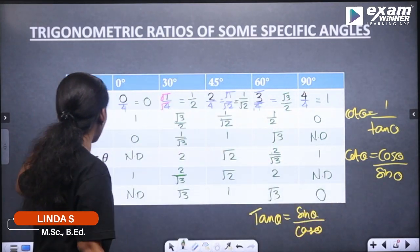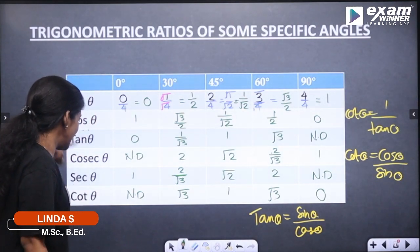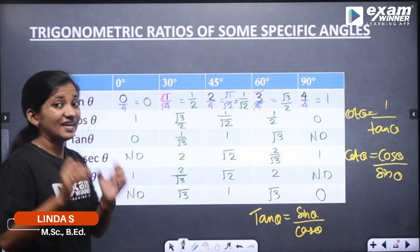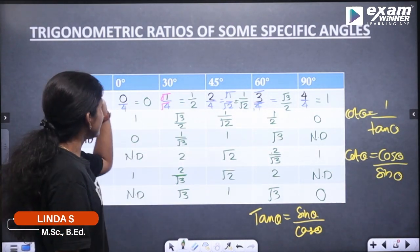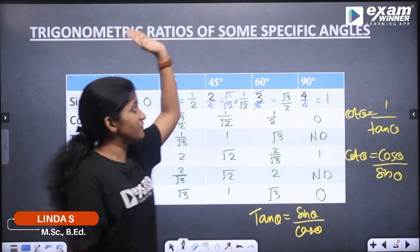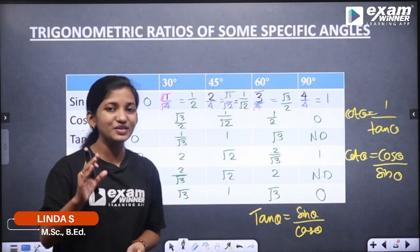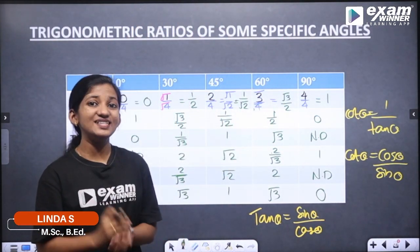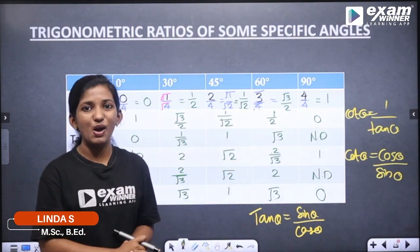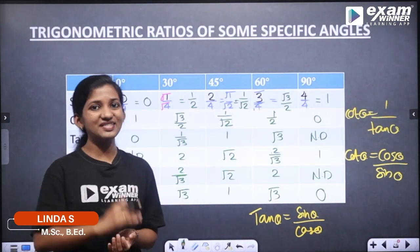Sin, cos, tan, cosec, sec, cot — in these trigonometric ratios, the values for 0° through 90° are used. These values help us solve many problems.